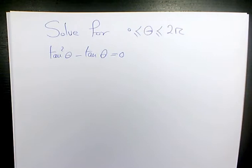to show you how to solve this trigonometric equation which is tan squared theta minus tan theta equals to zero.